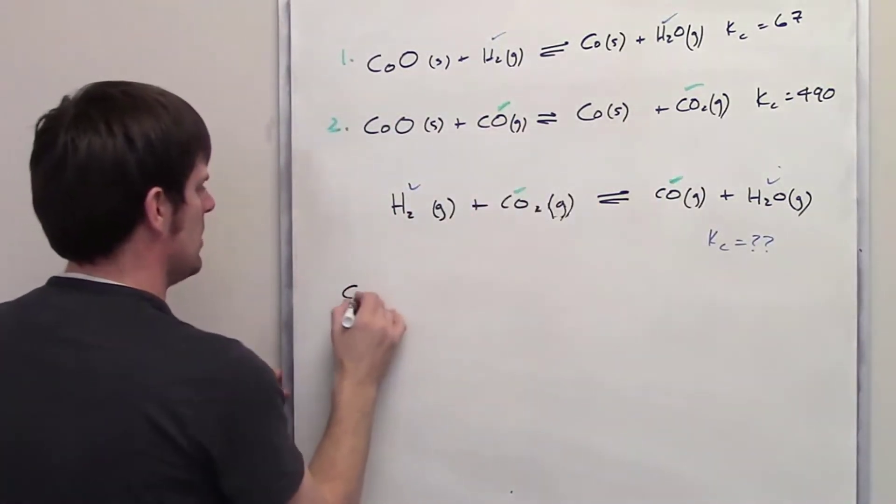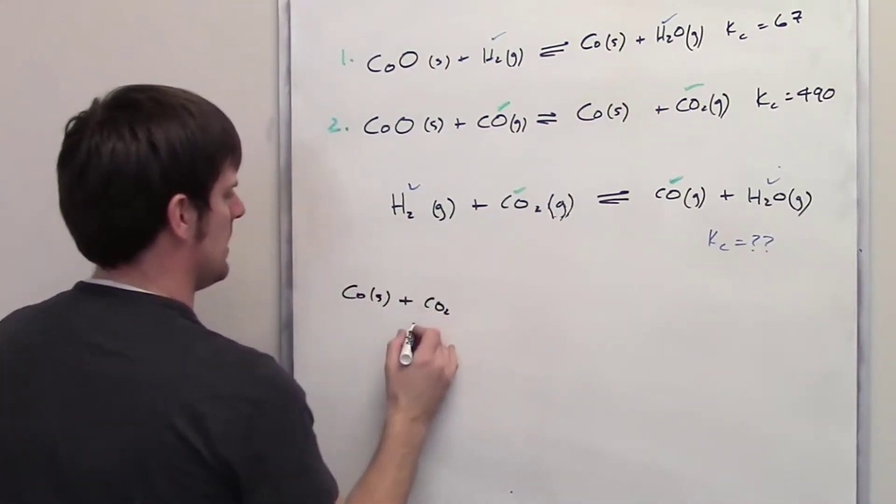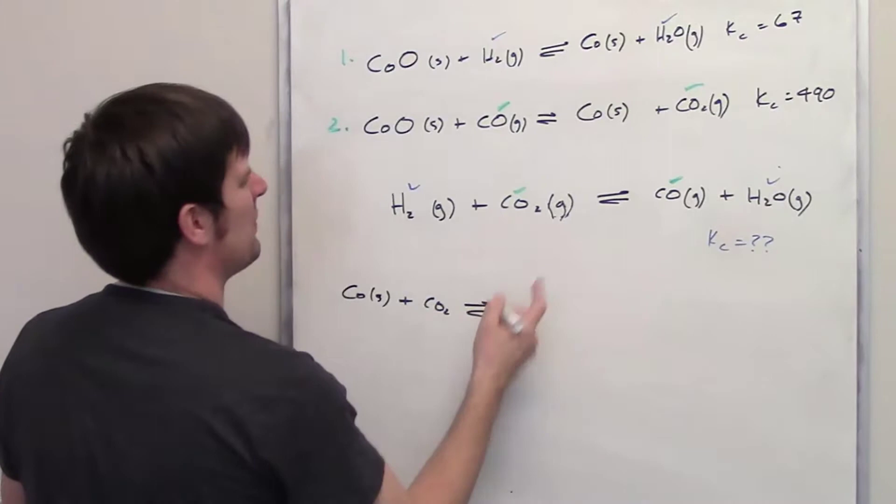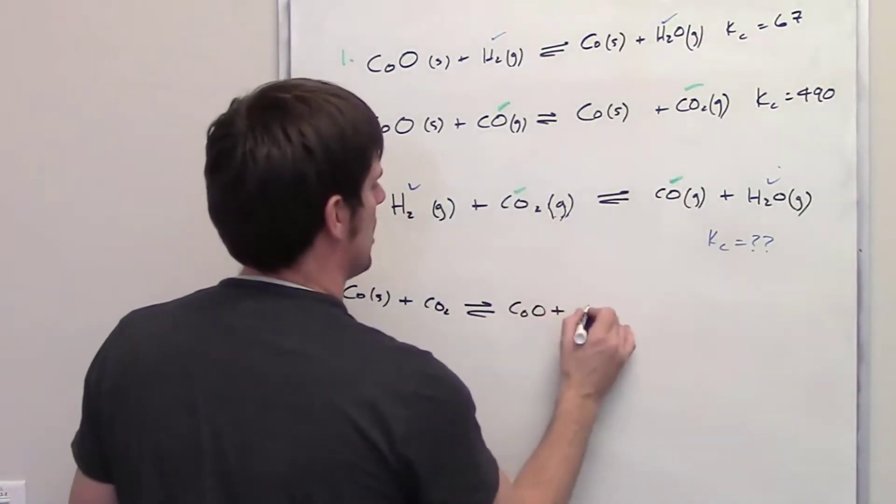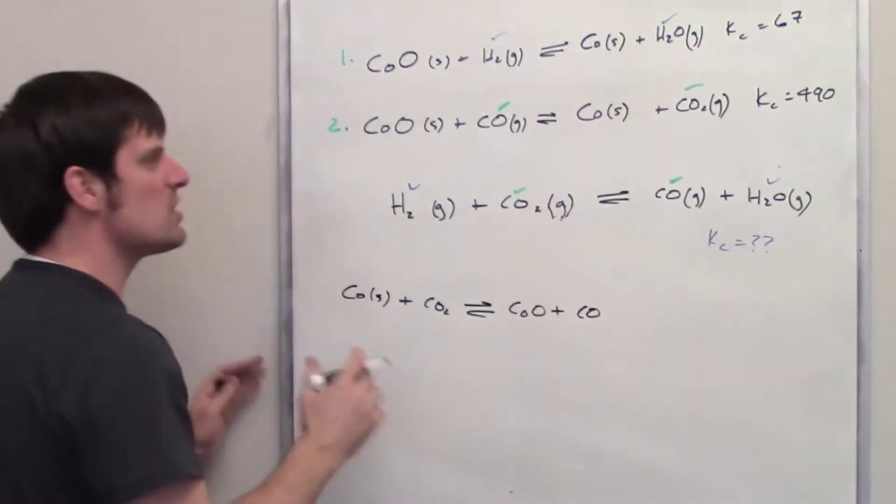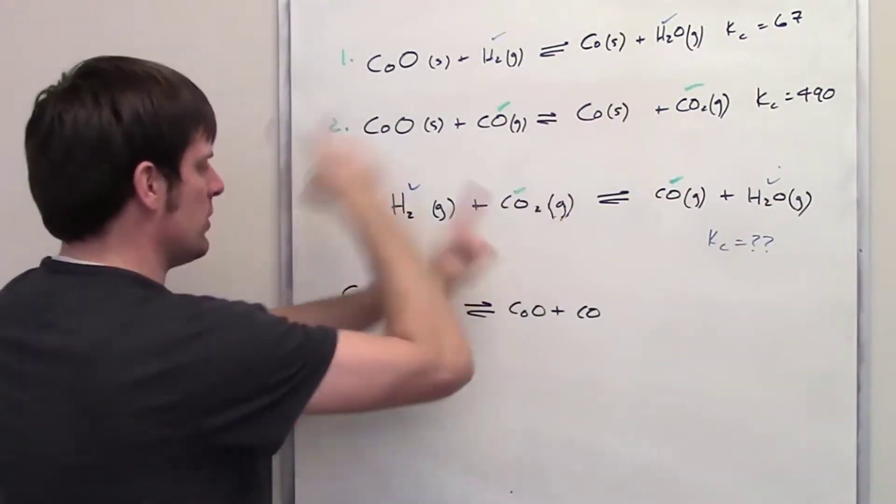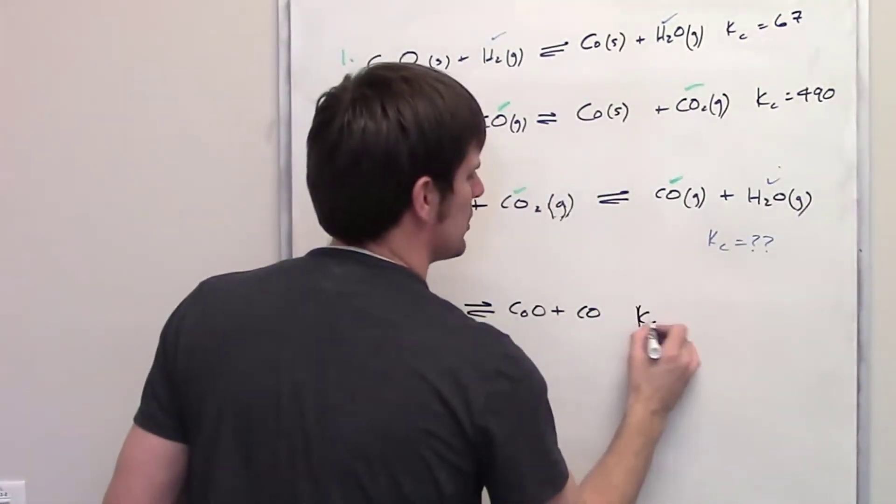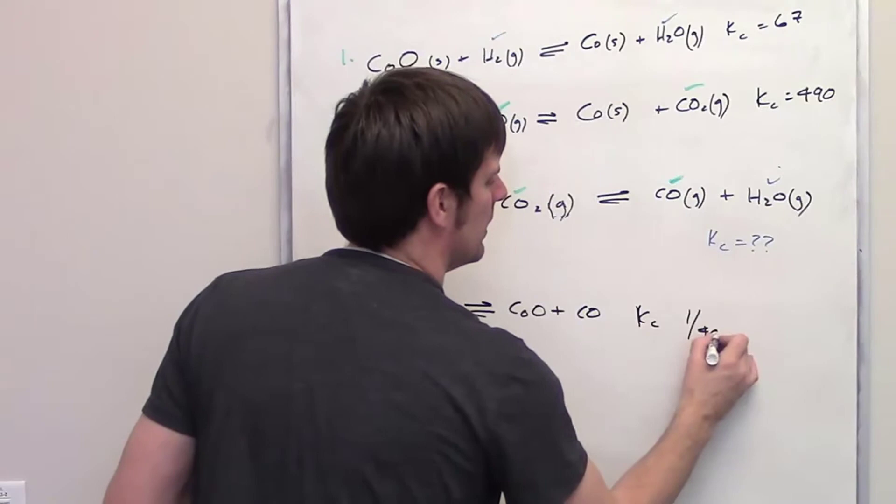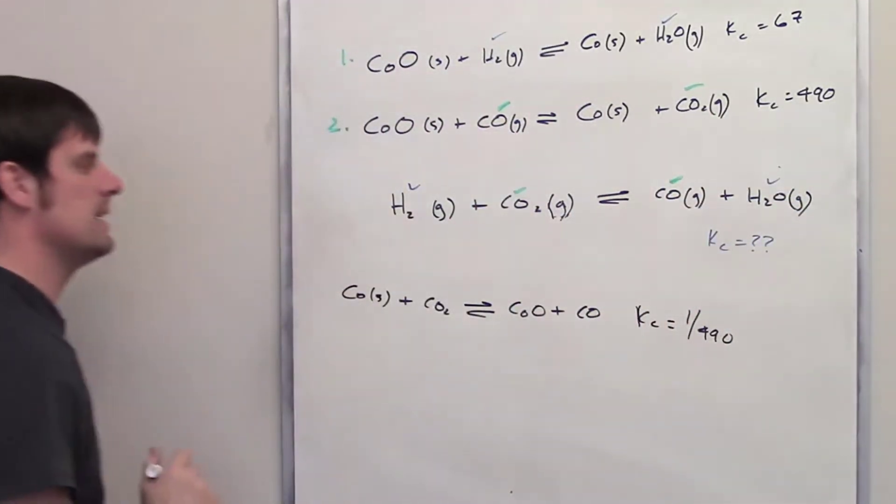I'm going to take equation two and I write down cobalt solid added to carbon dioxide gives me cobalt oxide plus carbon monoxide. Now what does that do to the Kc? If you take any equation and reverse it, which you totally can, the new Kc for it becomes the reciprocal. So it becomes 1 over 490. Since 490 here, I flip it, it becomes 1 over 490.